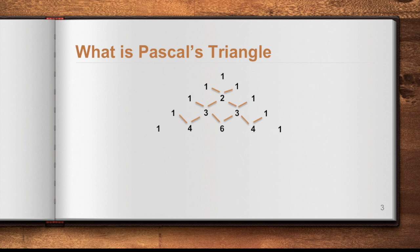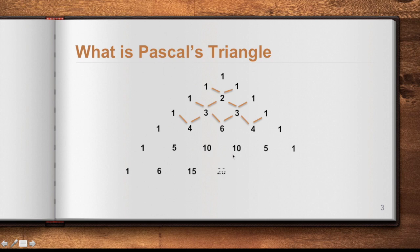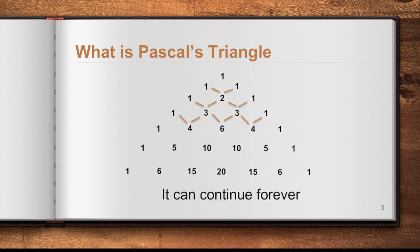Let's look at the next row. We have 1 plus 4 is 5, 4 plus 6 is 10, 6 plus 4 is 10, 4 plus 1 is 5, and 1 at the other end. And again the next row will be 1, 1 plus 5 is 6, 5 plus 10 is 15, 10 plus 10 is 20, 10 plus 5 is 15, 5 plus 1 is 6, and then 1 at the end. As you notice, it forms a triangular figure consisting of numbers and it can continue forever.